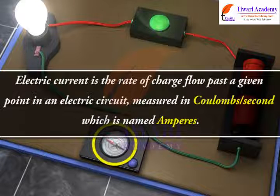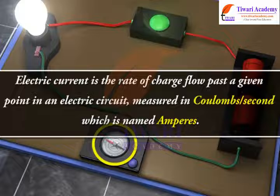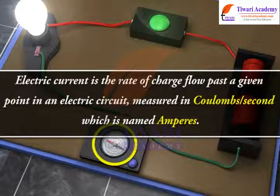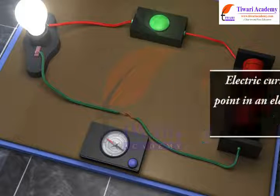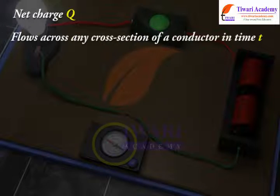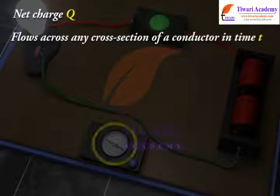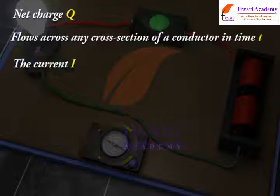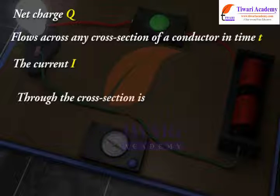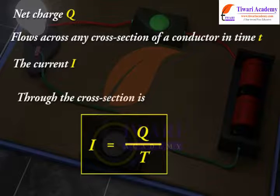Electric current is the rate of charge flow past a given point in an electric circuit, measured in coulombs per second, which is named amperes. If a net charge Q flows across any cross section of a conductor in time T, then the current I through the cross section is I equals Q divided by T.